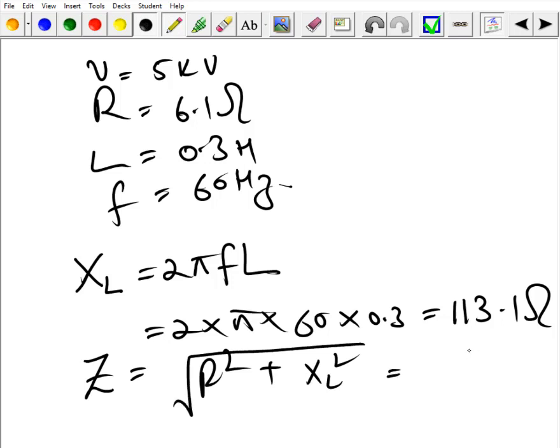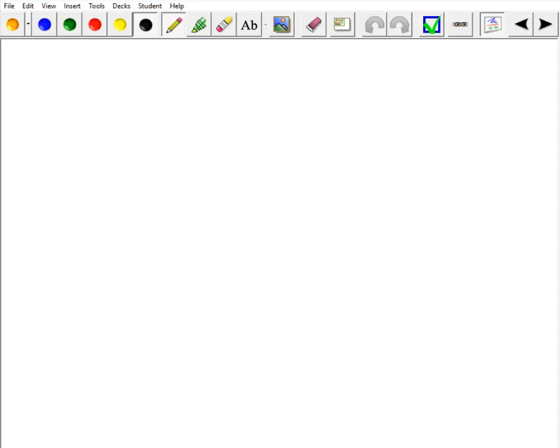That would be approximately square root of 6.1 square plus 113.1 square, and this comes out to be approximately 113.26. Now as we know that I is equal to V over Z, so we have V is 5 kV and Z is 113.26, and this current is approximately 44.14 ampere.